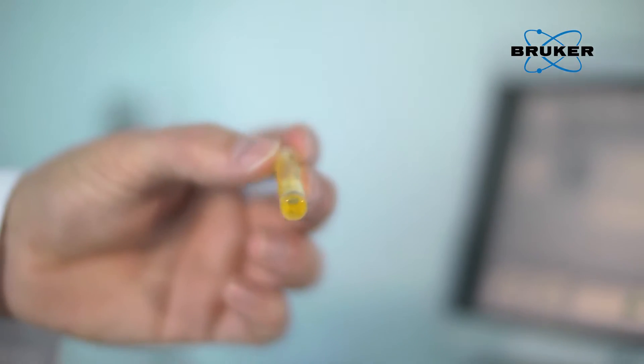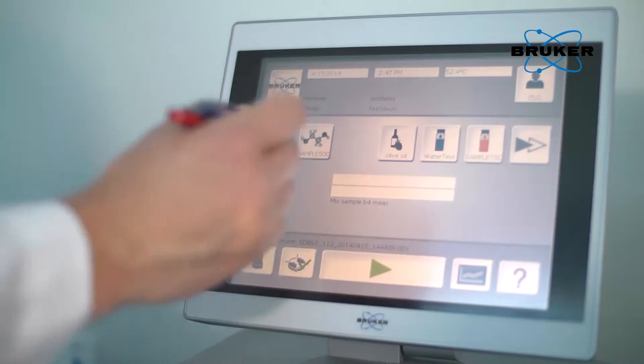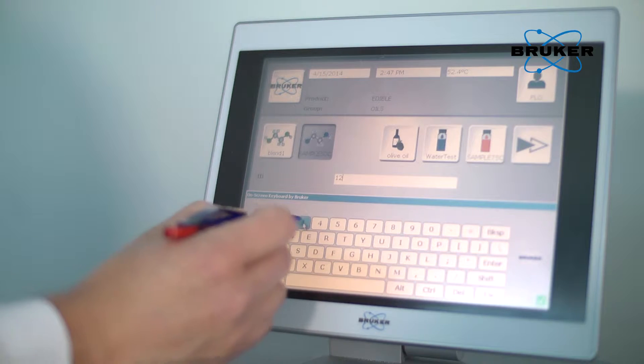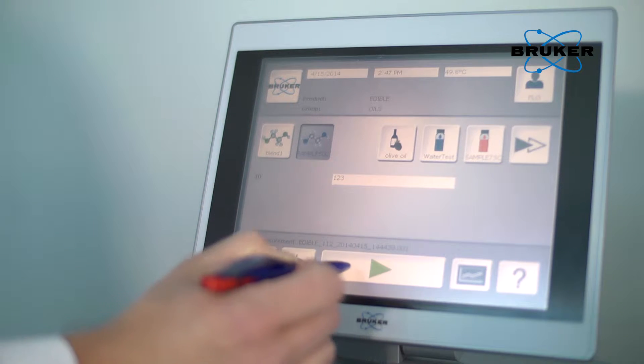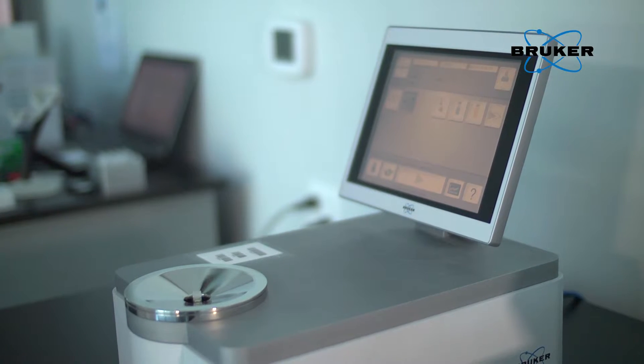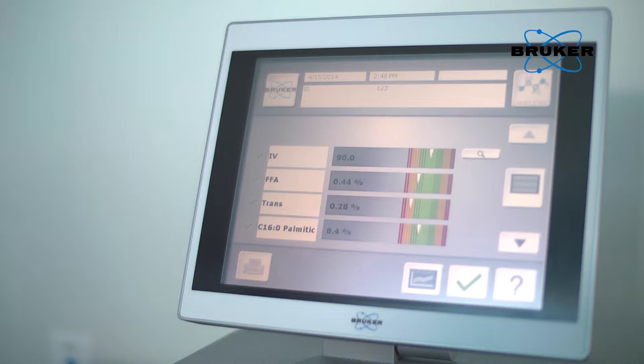The sample is simply filled into the measurement cup or sample vial and placed onto the spectrometer. The product is selected by either pressing on the respective product icon or by using a barcode reader. A simple touch on the screen starts the measurement. The progress is displayed through the green status bar. After approximately 15 to 30 seconds, the measurement is complete.